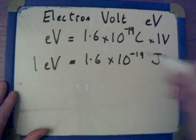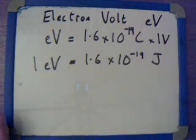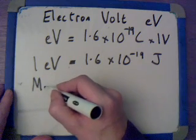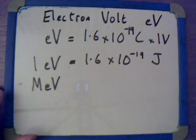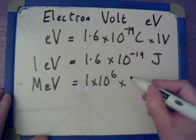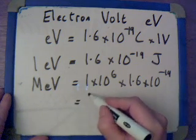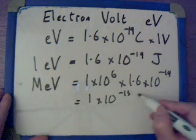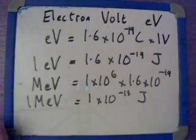So one electron volt is equivalent to 1.6 times 10 to the minus 19 joules. An electron volt is a tiny, insignificant piece of energy. However, it is used by scientists, also in the form of mega electron volts, when dealing with what happens at the very small scale. The mega electron volt is used a lot in particle physics and nuclear physics, and it is simply a million electron volts — 1 times 10 to the 6 multiplied by 1.6 times 10 to the minus 19 — which gives us 1 times 10 to the minus 13 joules.